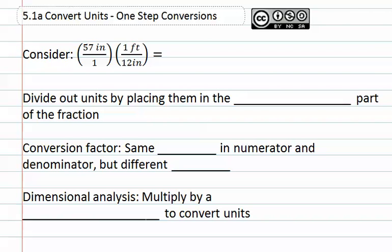Consider the following. We have 57 inches and we're multiplying it by a conversion factor of 1 foot per 12 inches. Remember the word per is a division bar.